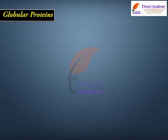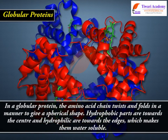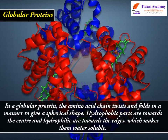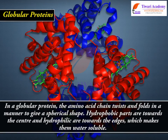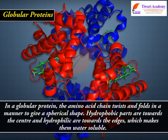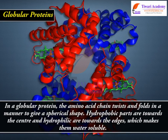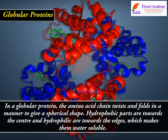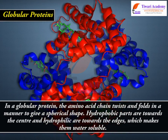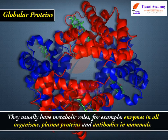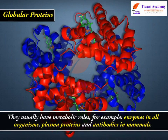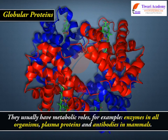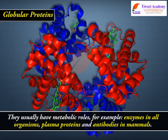Globular proteins. In a globular protein, the amino acid chain twists and folds in a manner to give a spherical shape. Hydrophobic parts are towards the center, and hydrophilic parts are towards the edges, which makes them water-soluble. They usually have metabolic roles, for example, enzymes in all organisms, and plasma proteins and antibodies in mammals.